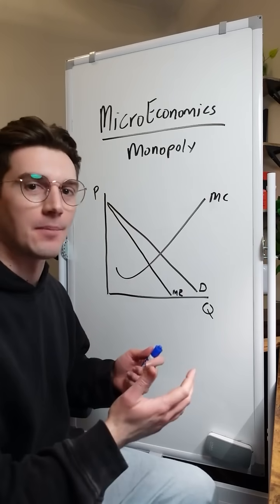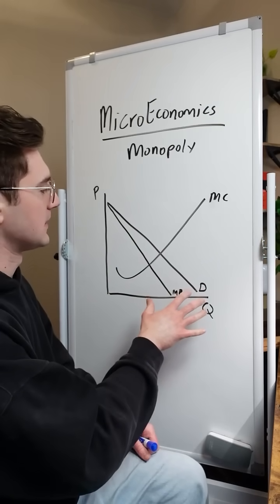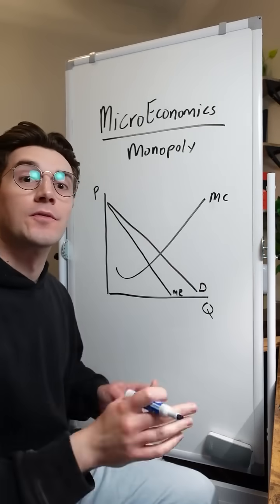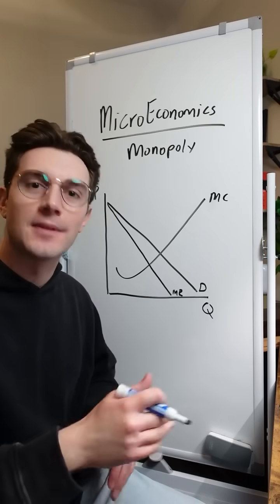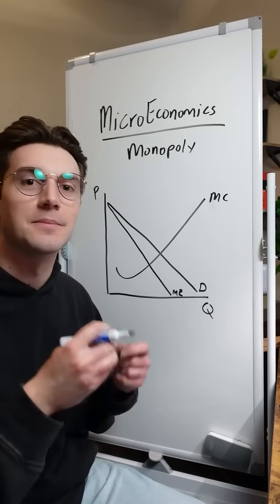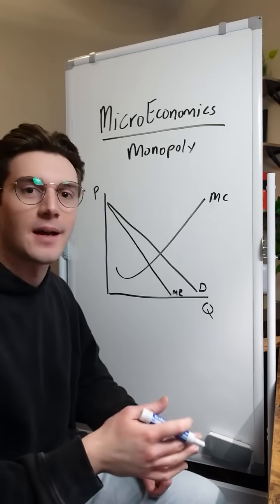All right, so here's an example monopoly market right here, and these are the three curves we need to pay attention to. The marginal cost curve for a monopoly serves as the supply curve, because remember, they're the only firm producing in the market, so there's really no supply curve.